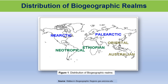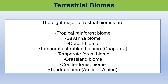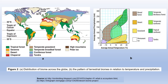Terrestrial biomes. It has already been mentioned that biomes represent major ecosystem types characterized by fairly similar climatic conditions and ecological communities. Although there is some disagreement among scientists on how to divide up the biomes of the earth, most of them agree that there are eight major terrestrial biomes. These are tropical rainforest biomes, savannah biomes, desert biomes, temperate shrubland biomes, temperate forest biomes, grassland biomes, conifer forest biomes, and tundra biomes.